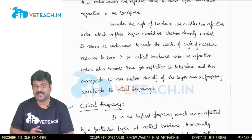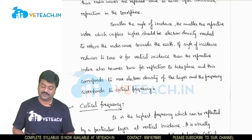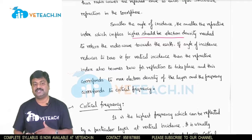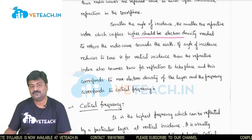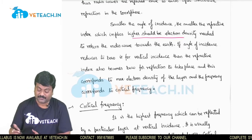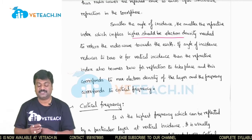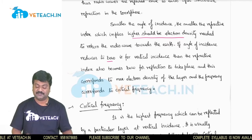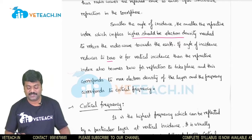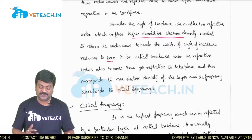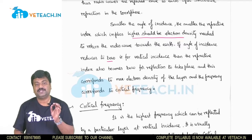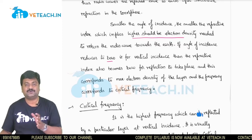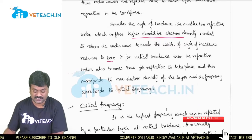The smaller the angle of incidence, the smaller the refractive index, which implies that less electron density is needed to return the radio wave toward the earth. If the angle of incidence is reduced to zero, that is vertical incidence, we will have zero reflection — meaning no reflection occurs when the angle of incidence is zero.